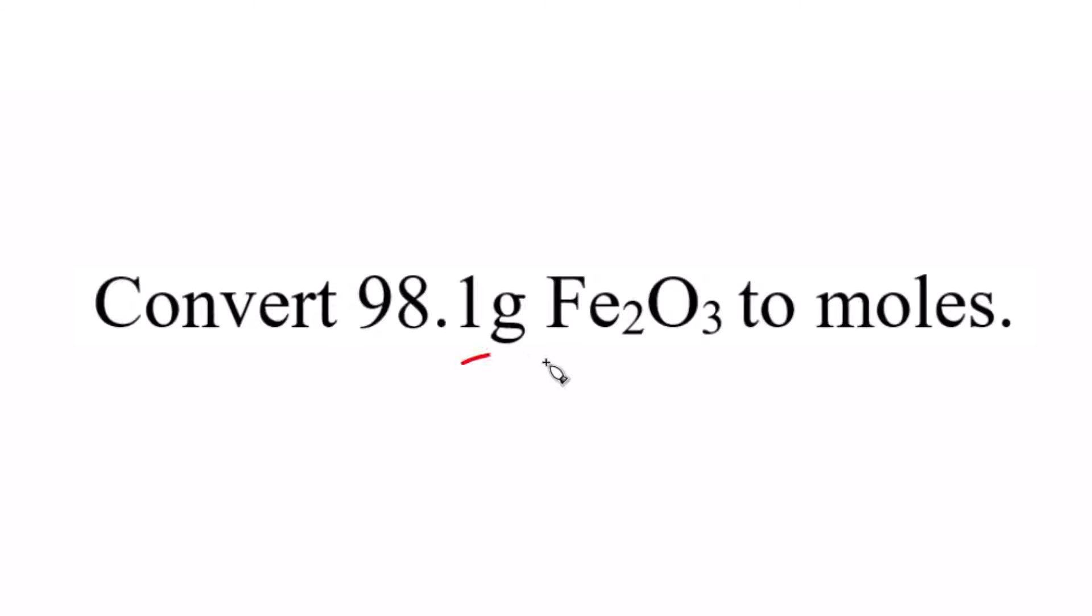Here's how we can convert from grams of Fe2O3 to moles. So we're talking about grams of iron(III) oxide, and we're going to moles. And we have 98.1 grams. That's just a number I made up for this video.